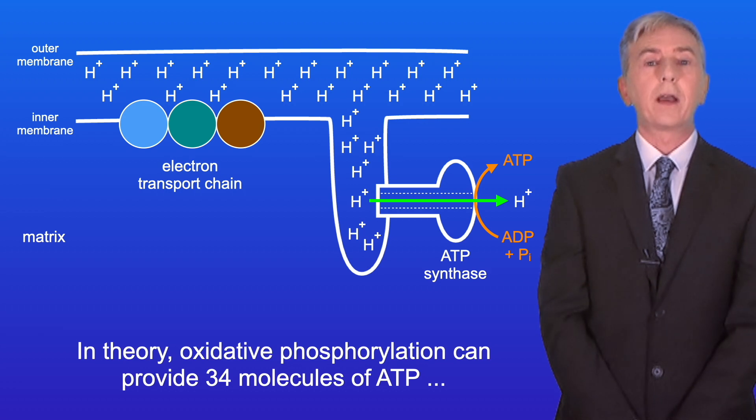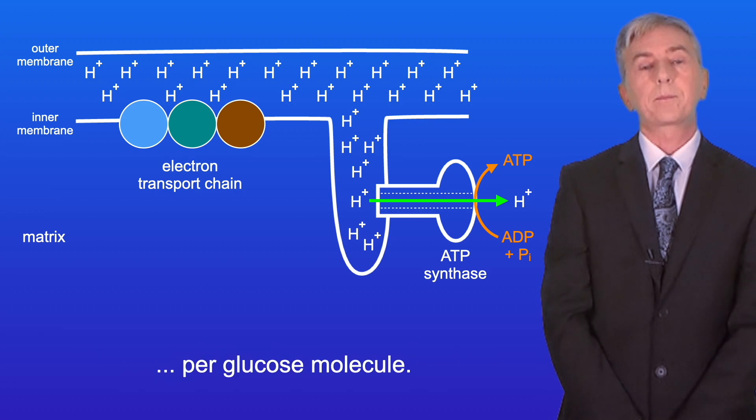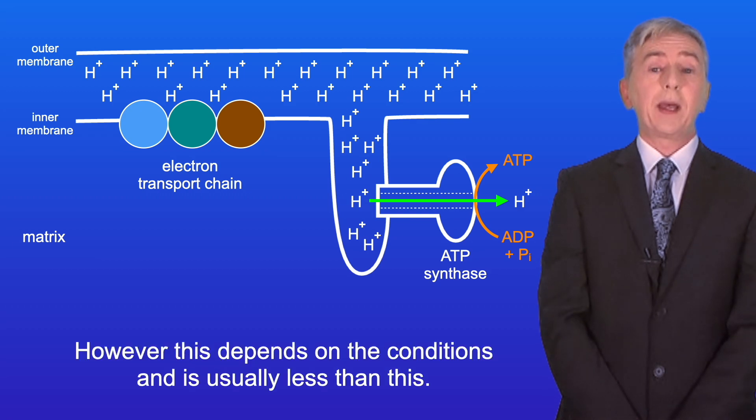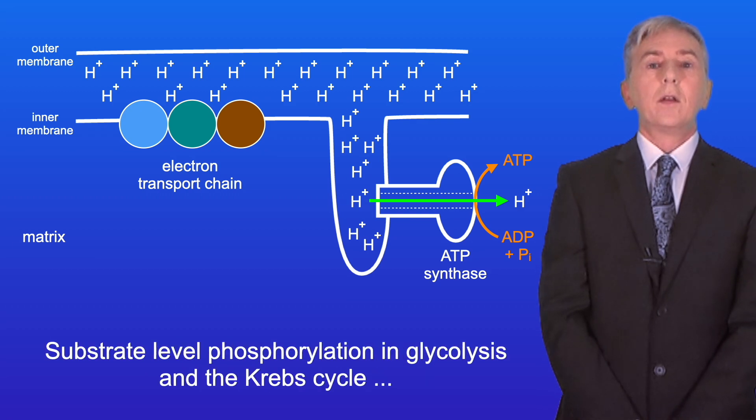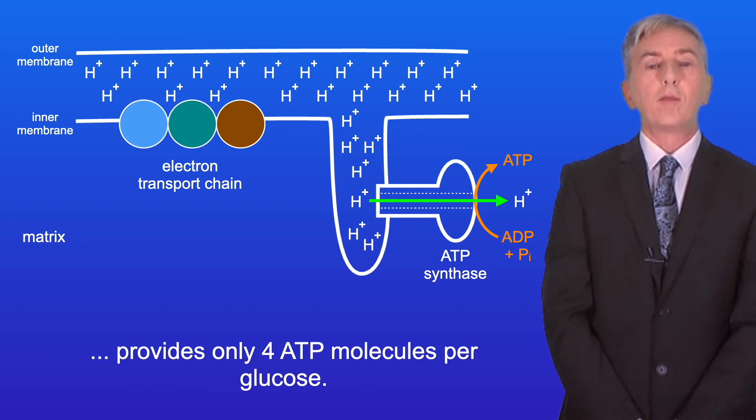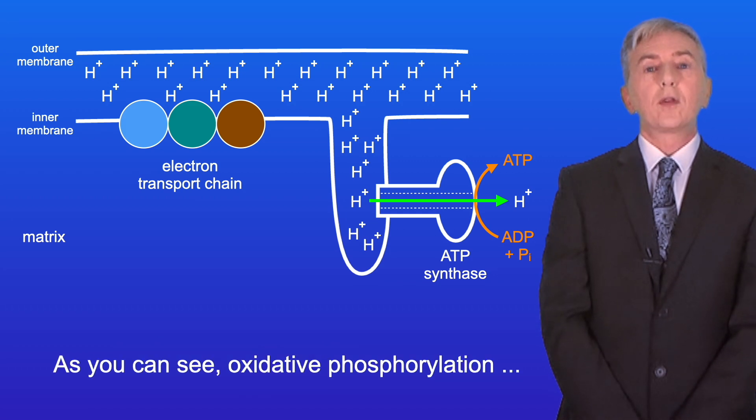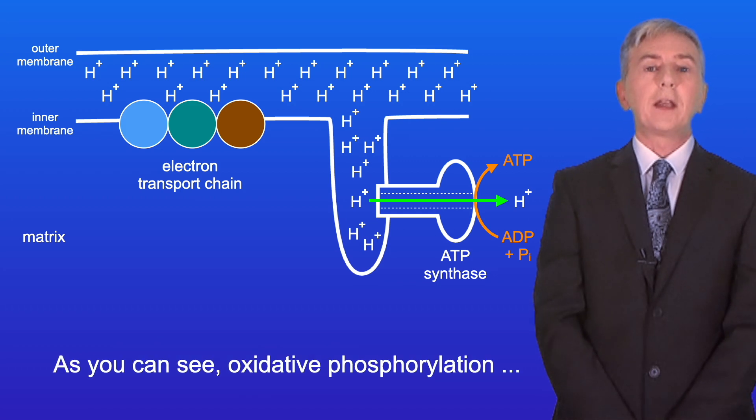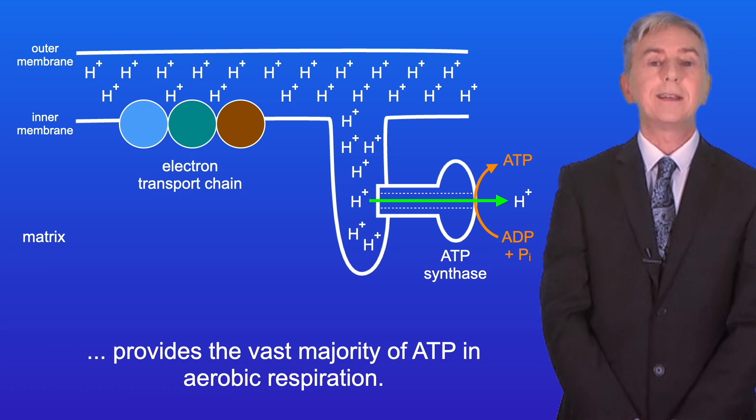Now in theory, oxidative phosphorylation can provide 34 molecules of ATP per glucose molecule. However, this depends on the conditions and is usually less than this. Substrate level phosphorylation in glycolysis and the Krebs cycle provides only 4 ATP molecules per glucose. So as you can see, oxidative phosphorylation provides the vast majority of ATP in aerobic respiration.